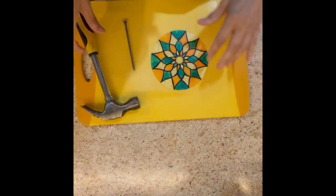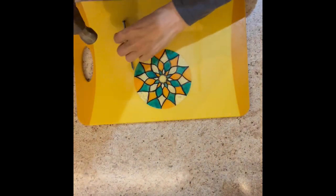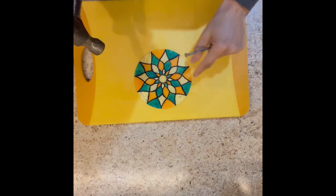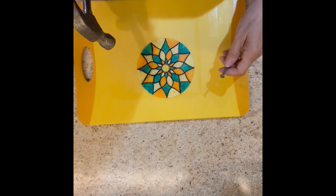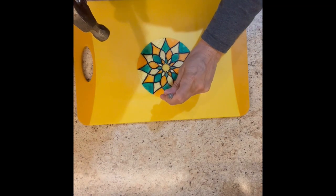Get an old piece of wood or an old cutting board and place your disc on top of it. Position the nail at the top of the disc and use the hammer to punch the nail into the disc and make a hole.